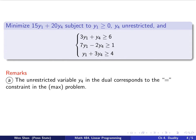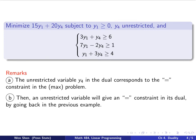And that leads to the remarks we want to make. Remark (a): The unrestricted variable, the second variable we call y4, in the dual problem actually corresponds to that equal constraint in the original max problem. So an equal constraint in the problem will cause an unrestricted variable in its dual. Remark (b): Then we can think backwards. Since the dual of a dual is the original problem, then an unrestricted variable in the original problem would give you an equal constraint in its dual, by simply going back in this previous example.